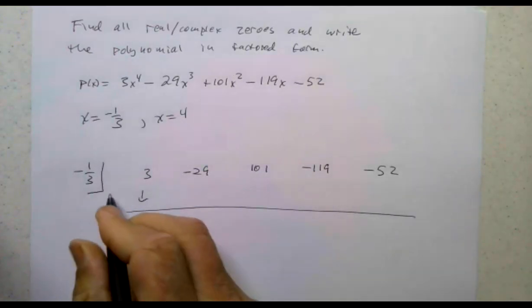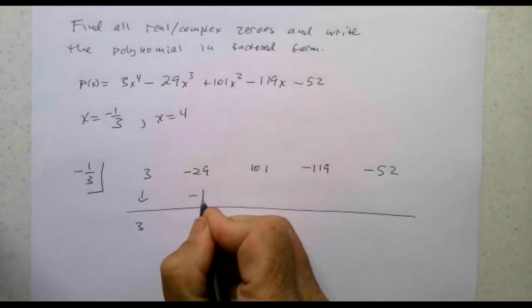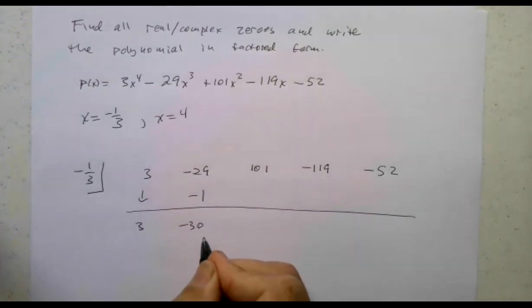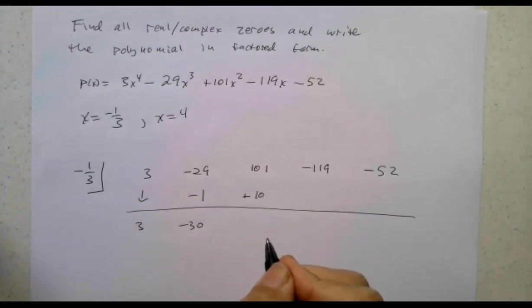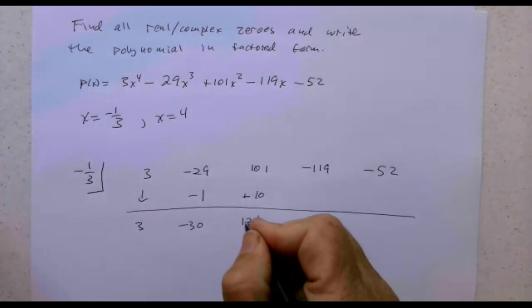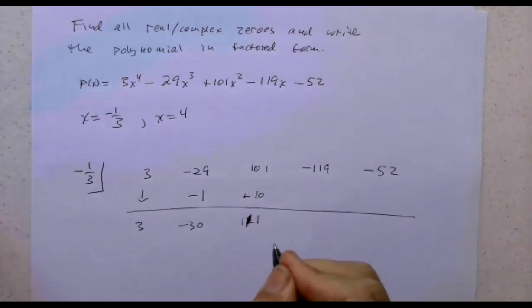Pull the three down. Negative a third of three is negative one. -29 and -1 is -30. Negative times negative positive, a third of 30 is 10. 101 and 10 is 121. Negative a third times 121 is what? 111. That's a mistake. 101 and 10 is 111.